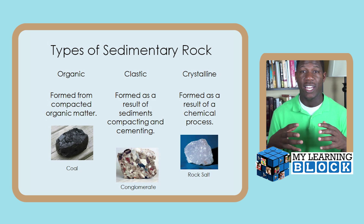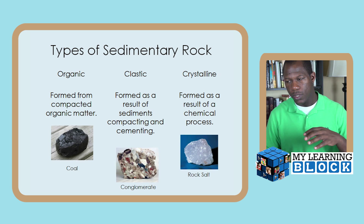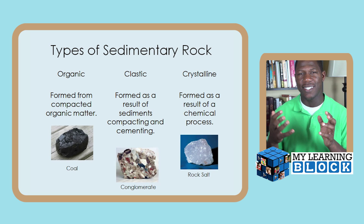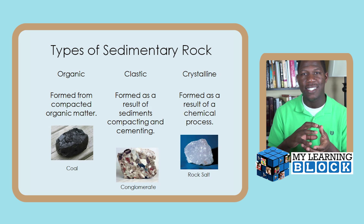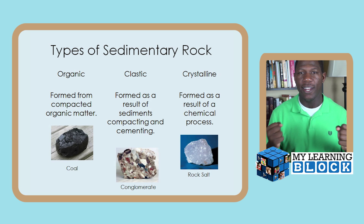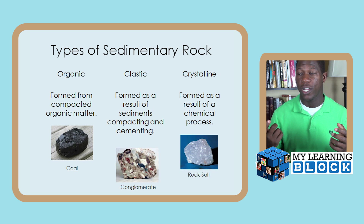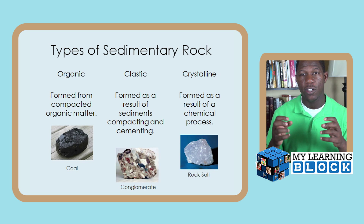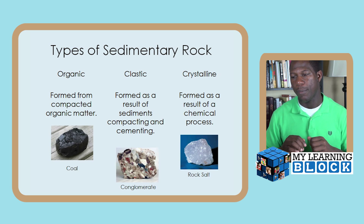Organic generally means it came from some type of living matter — fossils, yes, they're organic. Clastic rocks are formed as sediments compact and cement together, like conglomerate. As you can see in the picture of conglomerate, you can see each sediment that has compacted together — different minerals and different rocks that have made a home in this conglomerate rock, combining organic and inorganic material.